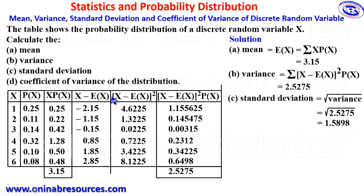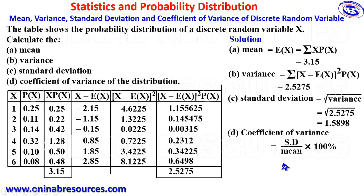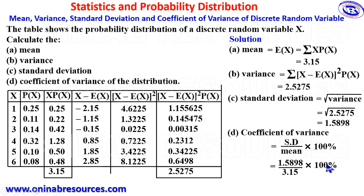Having found the standard deviation, we then go for the coefficient of variance. The formula for calculating the coefficient of variance is the standard deviation divided by the mean, multiplied by 100%. Our standard deviation is 1.5898 divided by the mean of 3.15, multiplied by 100%. From the calculator, we get 50.47%, which represents the coefficient of variance of this probability distribution.